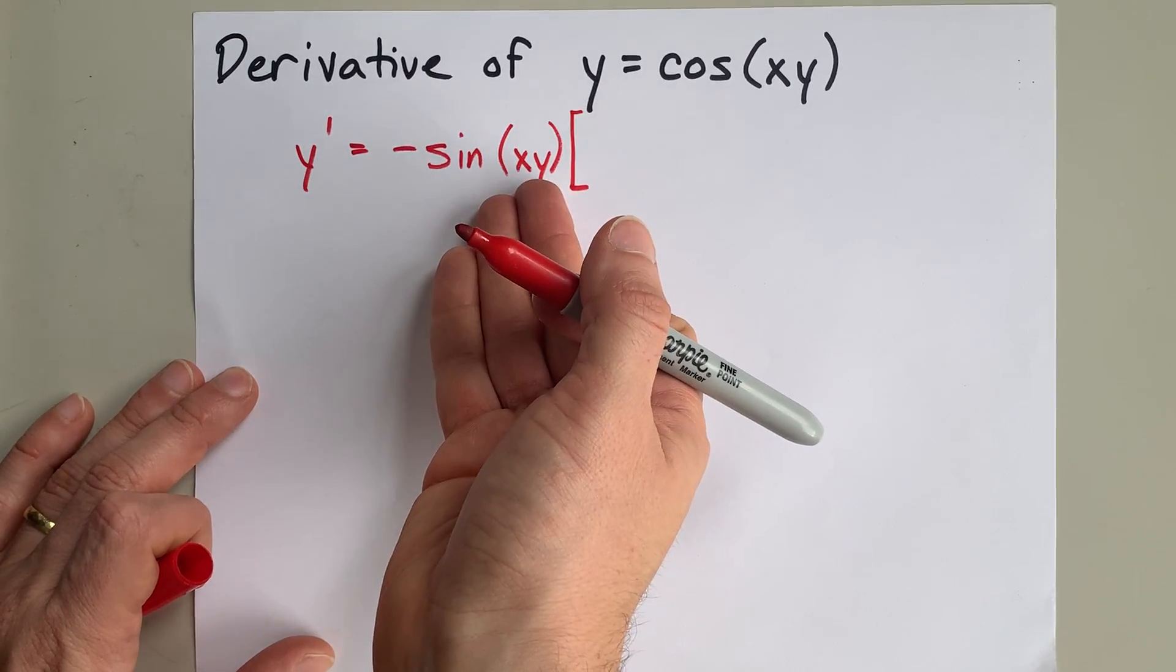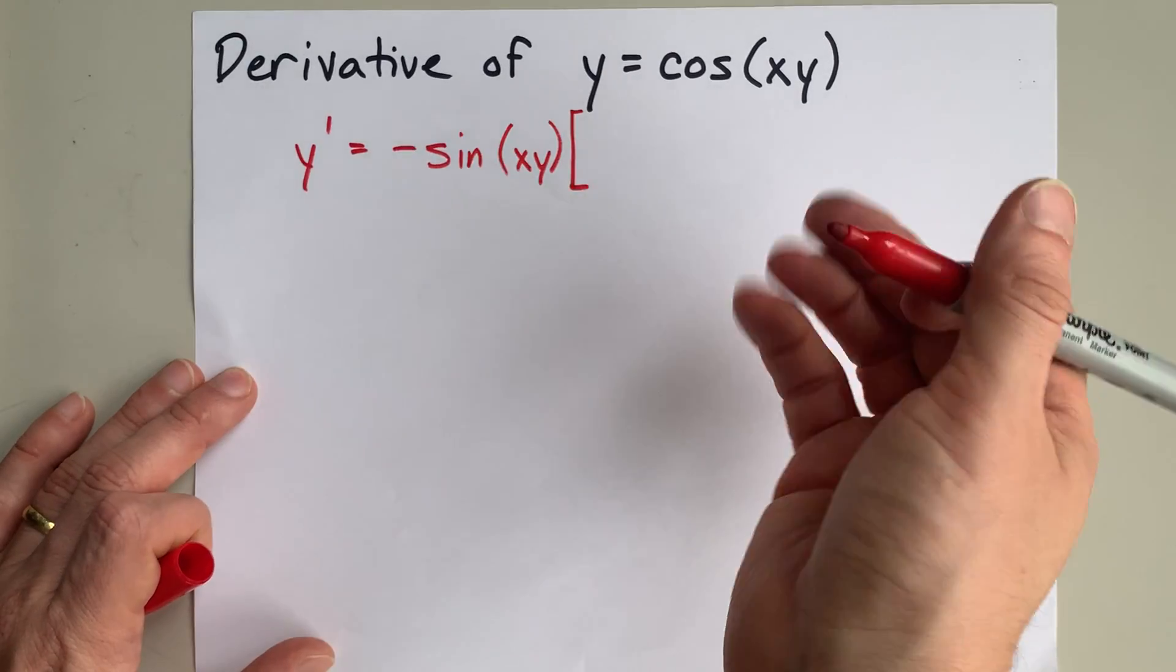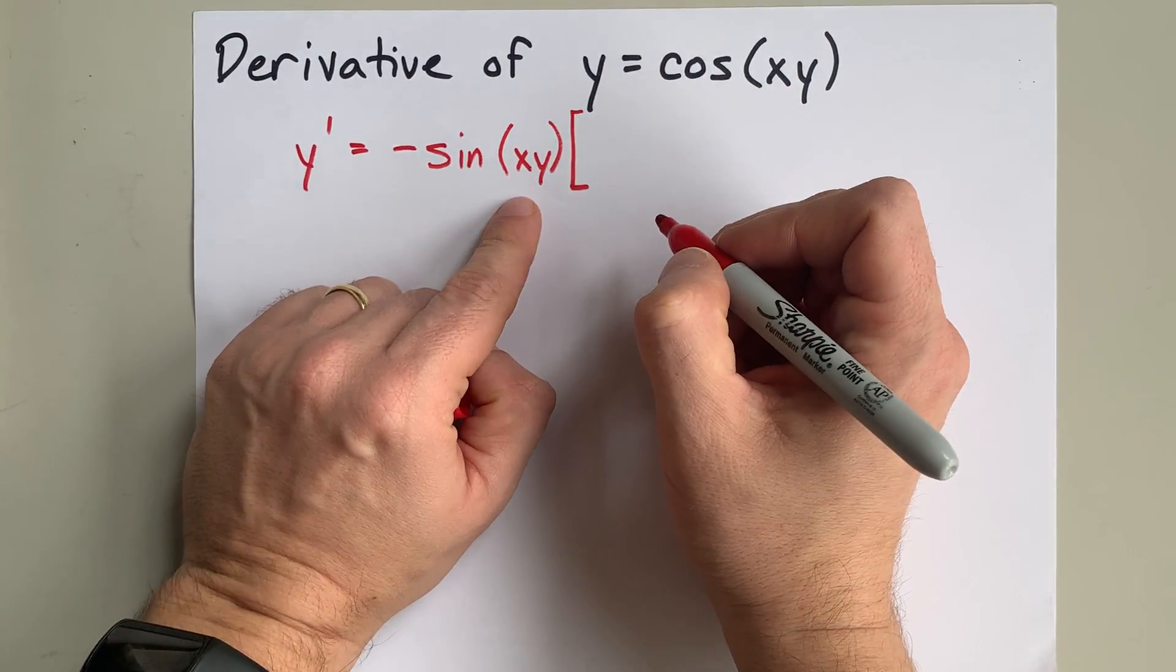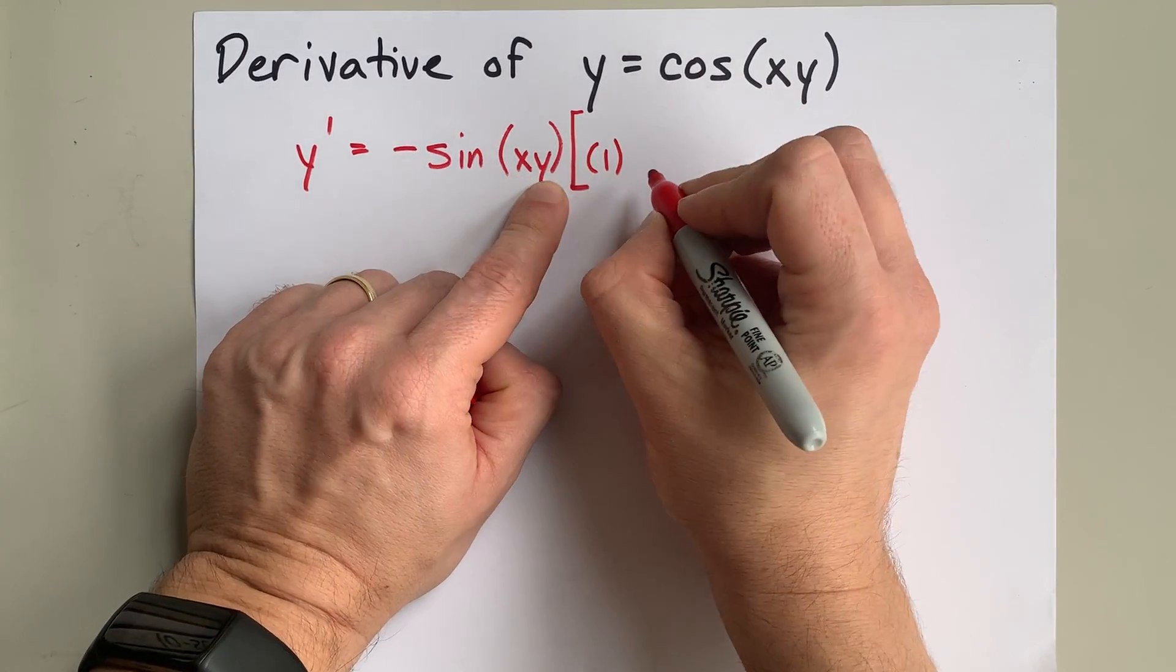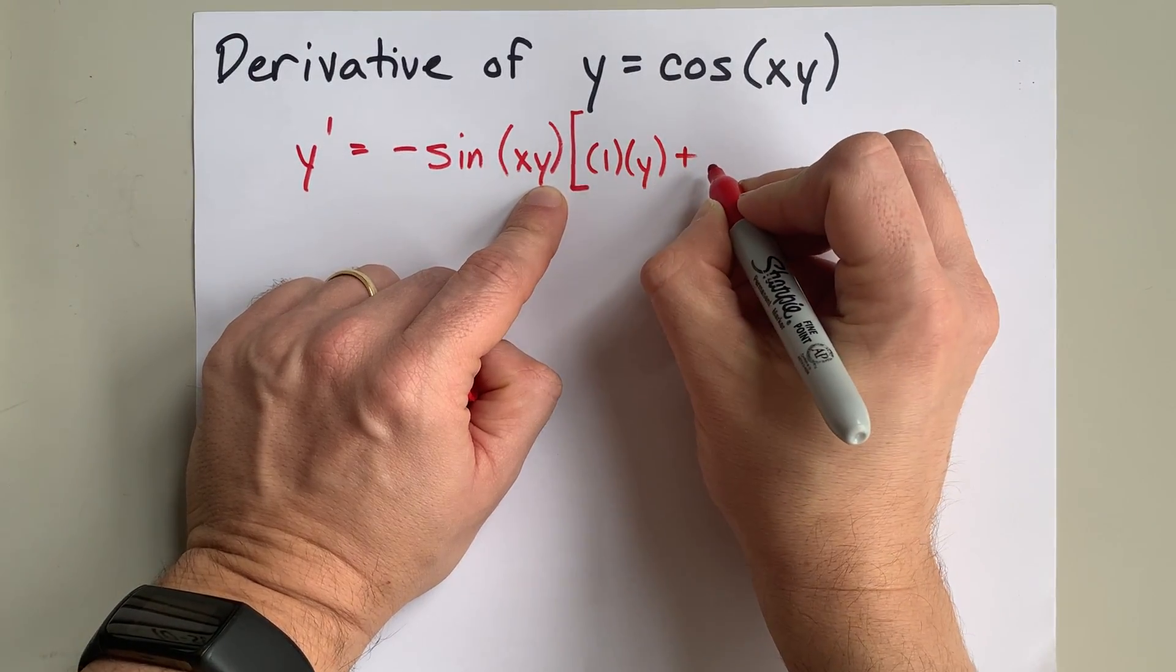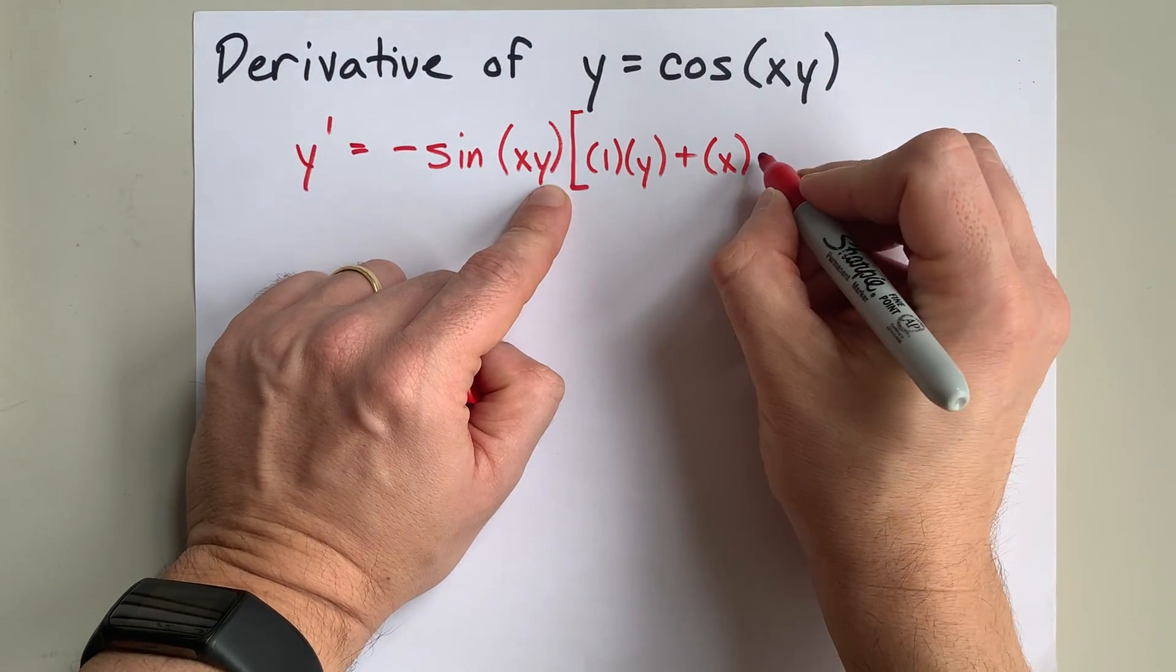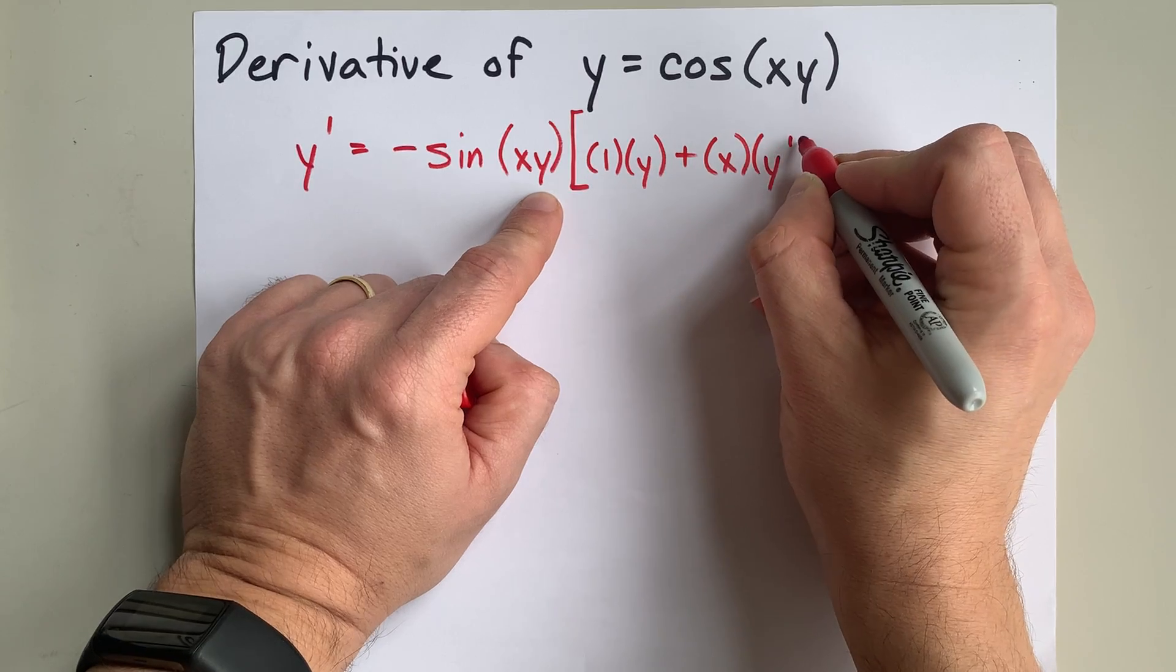What is on the inside here is x times y, so we're going to need product rule to do that. Product rule of this is derivative of the first thing, the derivative of x is 1, times the second thing as is, plus the first thing as is times the derivative of the second thing. The derivative of y we already said was y prime.